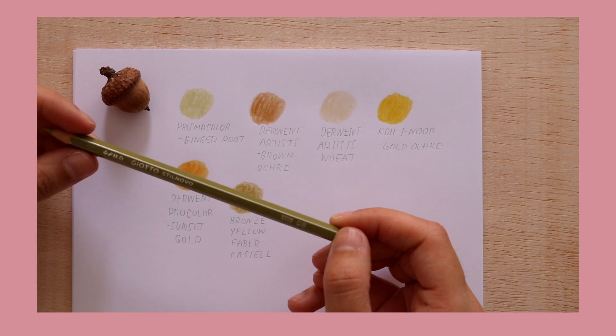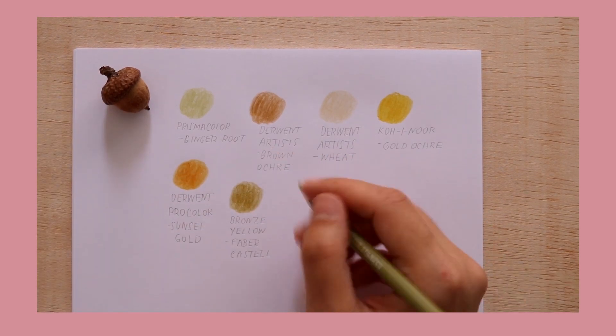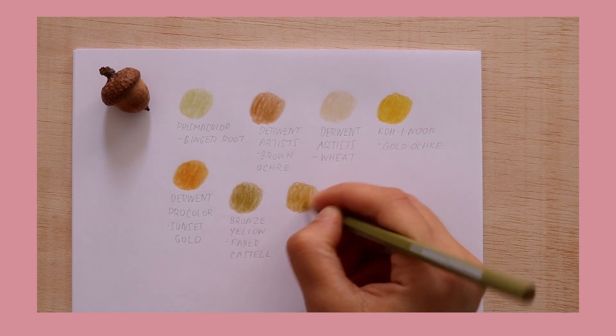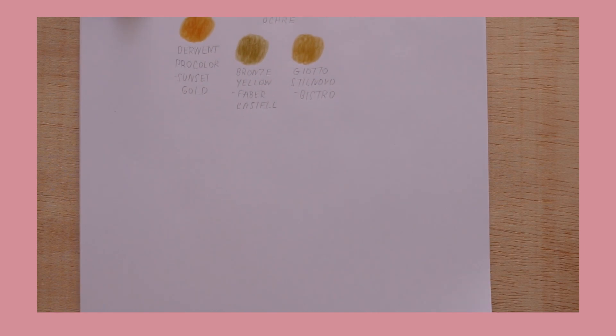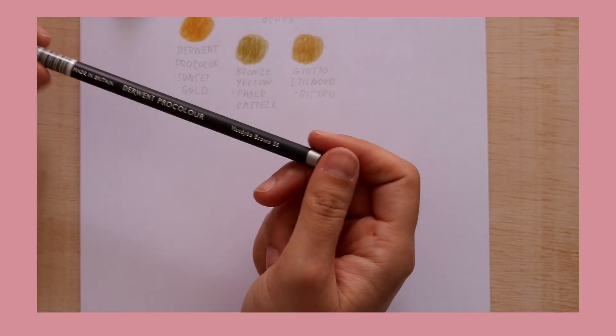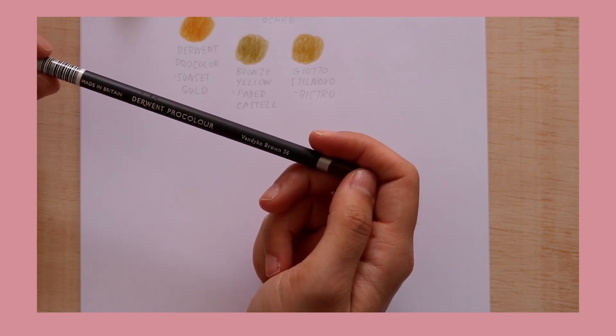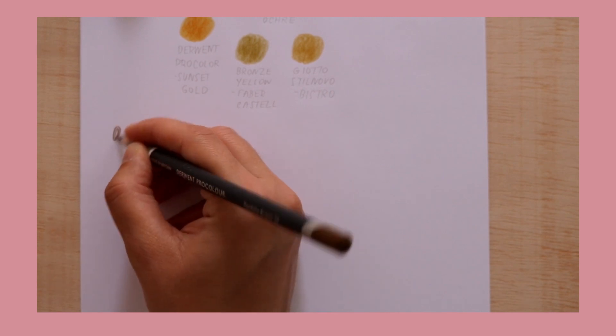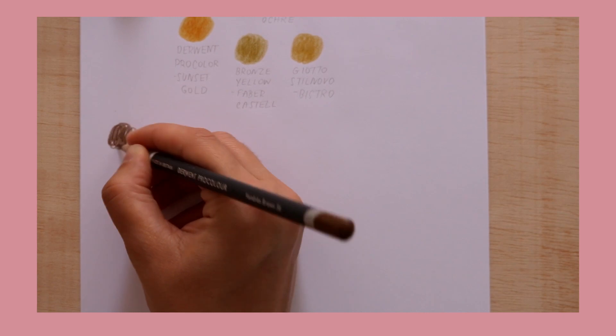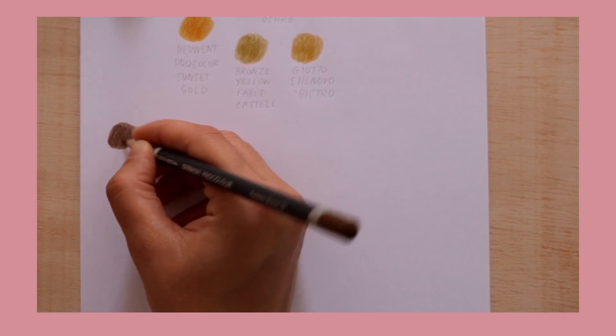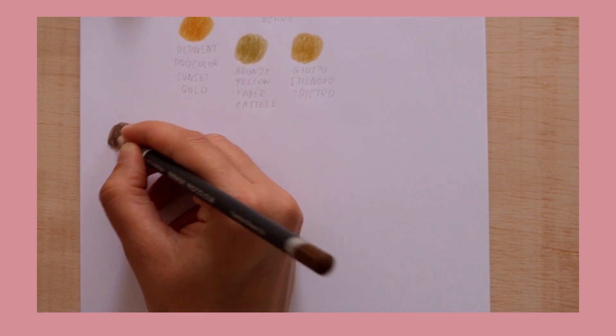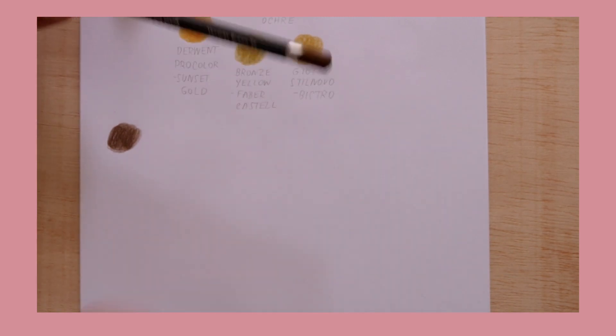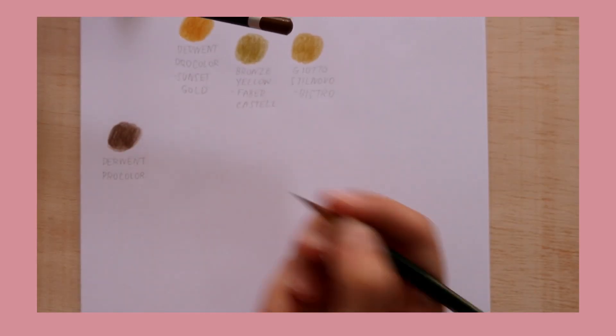And Bistro by Giotto Stilnova. Now, let's take a look at some of my beautiful brown colored pencils. So, here we have Van Dyck Brown, I think it's pronounced, by Derwent Pro Color. And this is a really beautiful neutral brown. And this one goes down really, really nicely. It's really buttery.